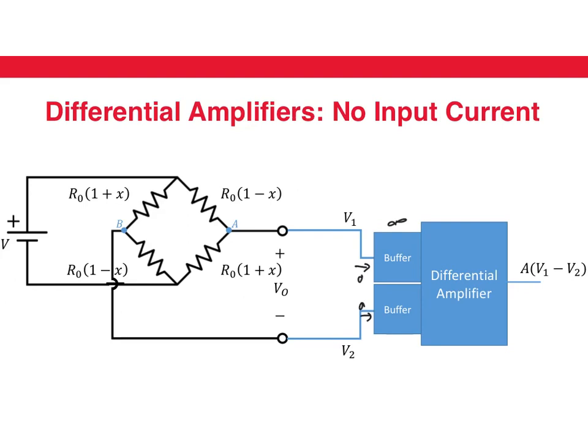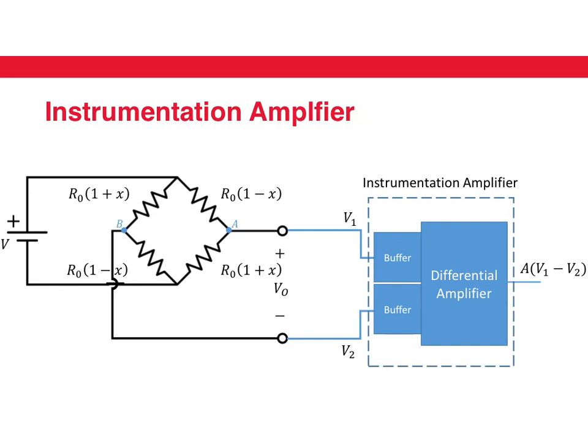This circuit — a differential amplifier with buffers — is called an instrumentation amplifier. An instrumentation amplifier is commonly used to amplify the output of the Wheatstone bridge.